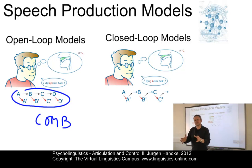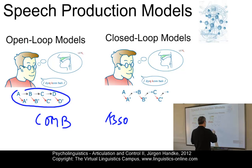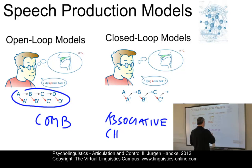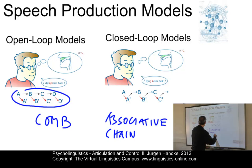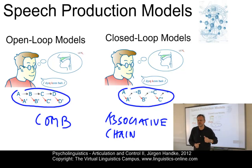The opposite model is the closed loop model, which is also referred to as the associative chain model. Here you see the chain of elements. The central implication is that each articulatory planning unit is fully controlled before the subsequent unit is retrieved.